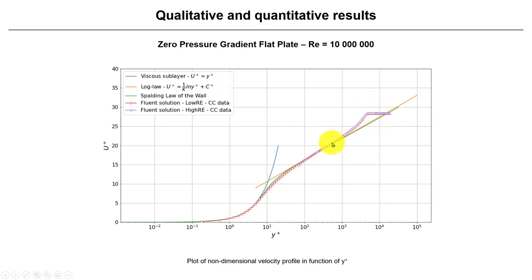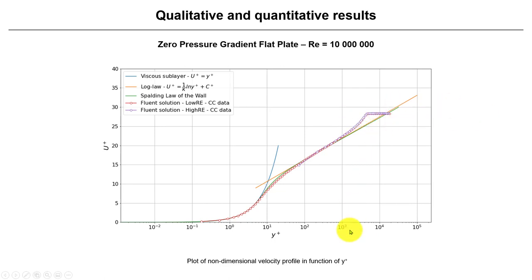In the viscous layer the solution is very precise, and in the logarithmic region it is also very precise. Comparing with the wall model, we can clearly see the first cell center. Using the wall model you are saving all these cells, and the result is very accurate as well. There are slight differences in the middle region, but it is very, very accurate. Here you have the defect region, and when the profile turns like this it is just the effect of the free stream — you are outside of the boundary layer.